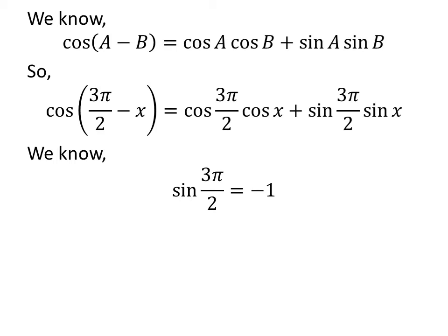We know the value of sine of 3 times pi upon 2 is equal to minus 1, and cosine of 3 times pi upon 2 is equal to 0. The verification of these trigonometry identities is explained in the video appearing in the upper right corner, and the link is also given in the description section.